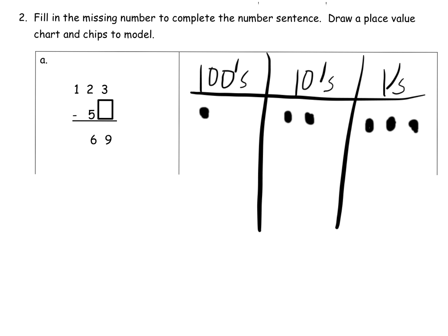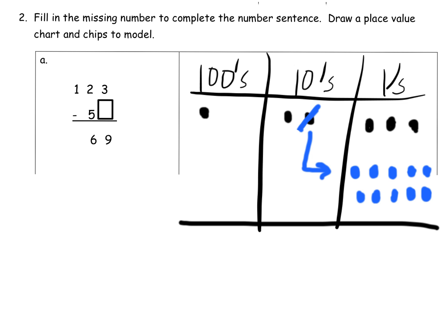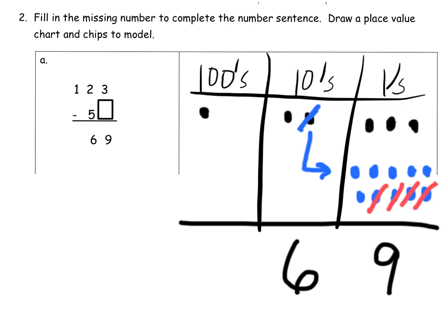So we're going to cross off that ten and unbundle, getting ten ones — two, three, four, five, six, seven, eight, nine, ten. Now using logic, we know we're supposed to end up with nine in the ones place. So counting from the top: one, two, three, four, five, six, seven, eight, nine — that means these four are going to be crossed off, giving us our nine left over. So that means the missing number in the ones place is four.